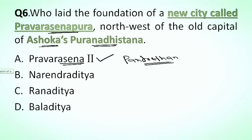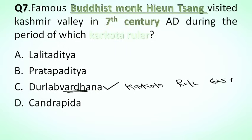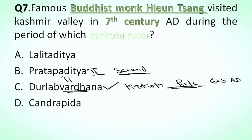Our next question is: the famous Buddhist monk Xuanzang visited Kashmir Valley in the 7th century AD during the period of which Karkota ruler? Options: A. Lalitaditya, B. Pratapaditya, C. Durlabhavardhana, D. Chandrapida. The correct answer is option C, Durlabhavardhana. Xuanzang visited during the time period of Durlabhavardhana. Durlabhavardhana was also the founder of Karkota rule in Kashmir in 625 AD. Pratapaditya was the second ruler of the Karkota dynasty and son of Durlabhavardhana.